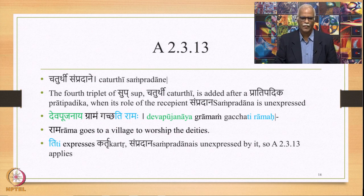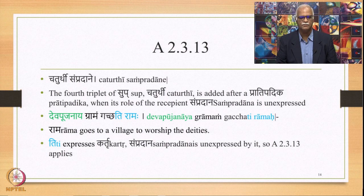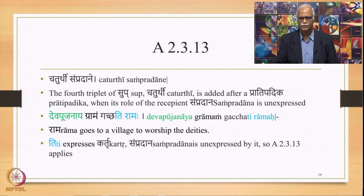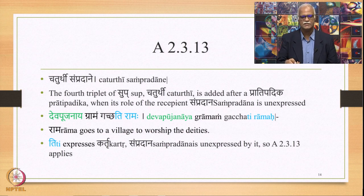We have 'Chaturthi sampradane,' Sutra 2.3.13. The fourth triplet of Sup, namely Chaturthi, is added after a Pratipatika when its role as the recipient — Sampradana — is unexpressed. Example: 'Deva pujanaya gramam gachati ramaha' — Rama goes to a village to worship the deities. Ti expresses Karthu which is Rama, and Sampradana is unexpressed by it. So 2.3.13 applies and Deva pujan, which is a Sampradana, gets Chaturthi — the fourth Sub-triplet.